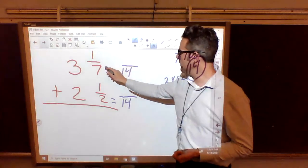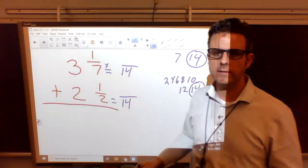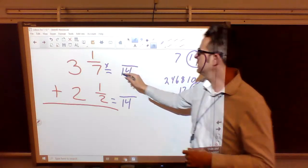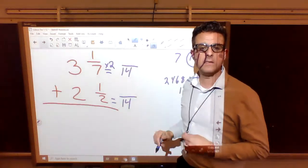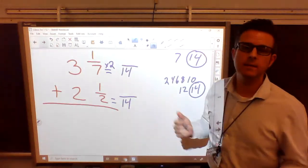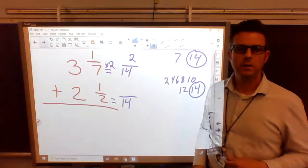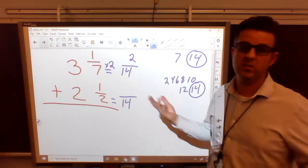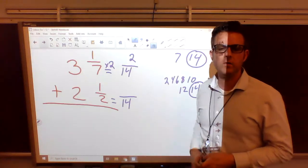How do we multiply to get from 7 to 14? 7 times what is 14? Well, right here, it tells you. It takes 2 of them. So 7 times 2 is 14. Now we have to multiply the top number times 2 because we did the bottom number times 2. So 1 times 2 is 2. So 1/7 turns into 2/14. That's just an equivalent fraction, but we need it to be 14ths because of this one.